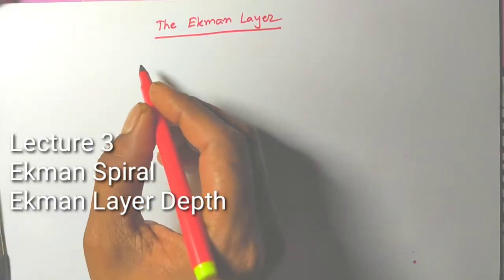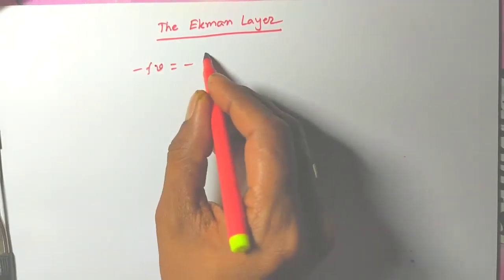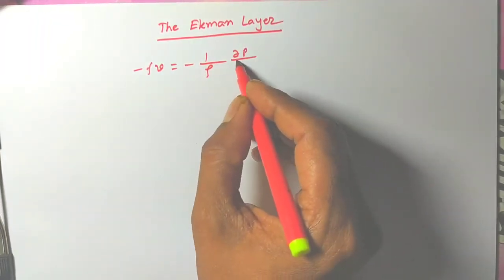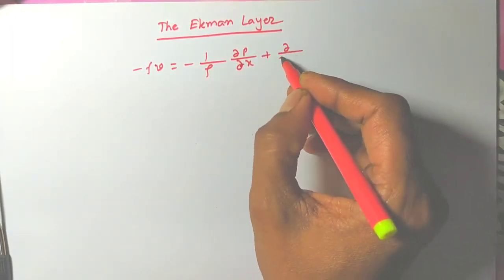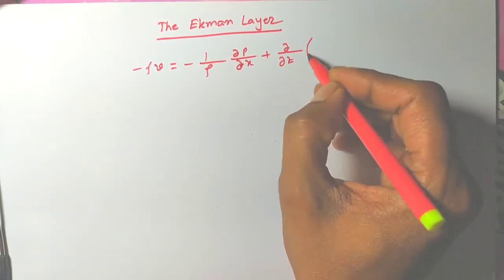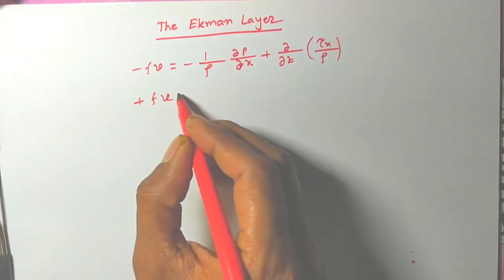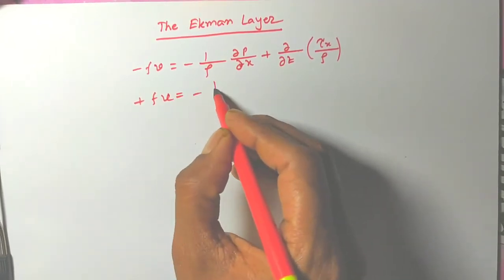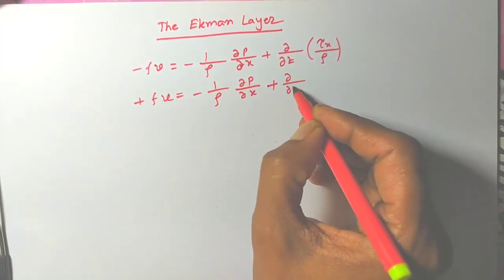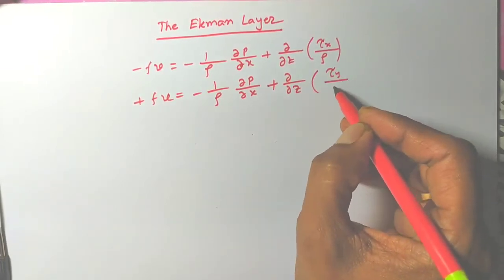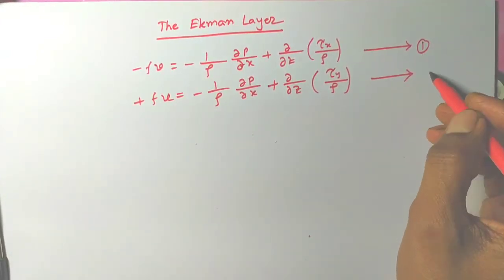As we already know, the PBL equations are: minus fV equals 1 over rho times del P over del x, and the corresponding equation for the y-direction. You can continue from the previous lectures. Let's index these as equation 1 and equation 2.